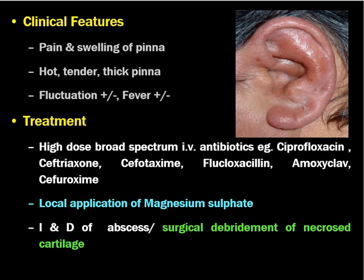The pinna will be hot, tender, and thick — that differentiates it from a pseudocyst or hematoma. Fluctuation may or may not be present, and the patient may also have fever. Treatment is with high-dose broad-spectrum IV antibiotics like ciprofloxacin, ceftriaxone, cefotaxime, flucloxacillin, amoxicillin-clavulanate, or cefuroxime. The infection may be due to Staphylococcus or Pseudomonas, and may progress leading to destruction of the cartilage and cauliflower ear. Local application of magnesium sulphate is important to reduce the edema. Sometimes the patient has to undergo incision and drainage of the abscess or surgical debridement of the necrotic cartilage. This condition may also lead to cauliflower ear.